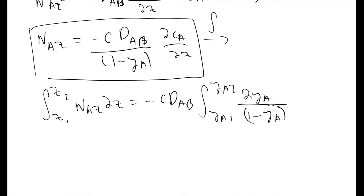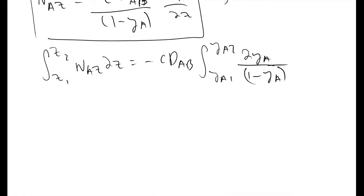At this point, if we evaluate this integral, the boundary conditions that we will use: the first boundary condition is that YA evaluated at Z1 is equal to YA1, and then the second boundary condition tells us YA evaluated at Z equals Z2 must be equal to YA2.